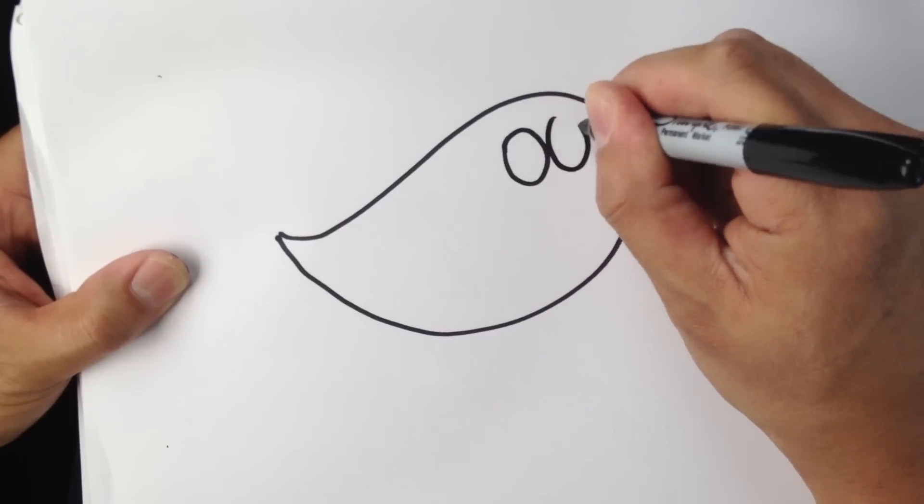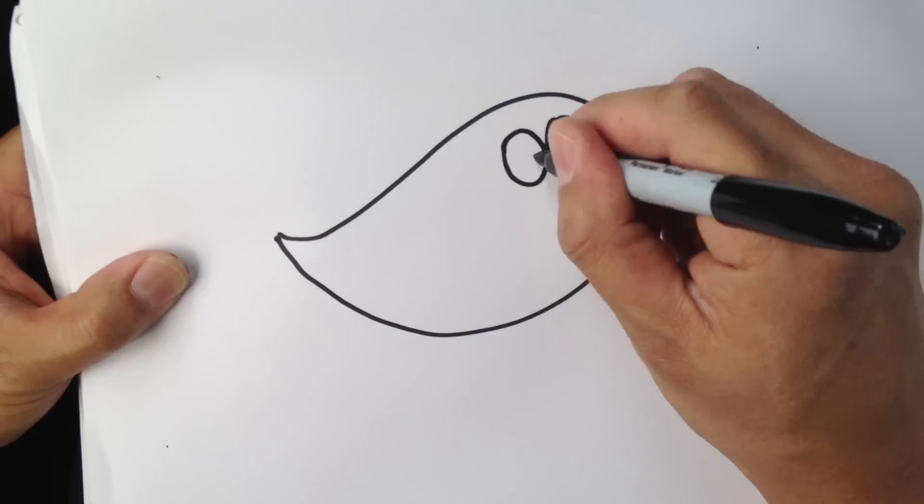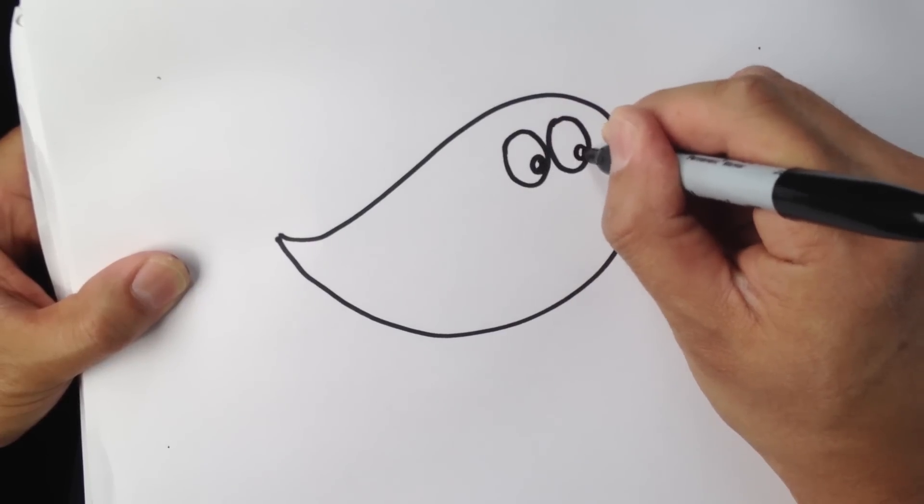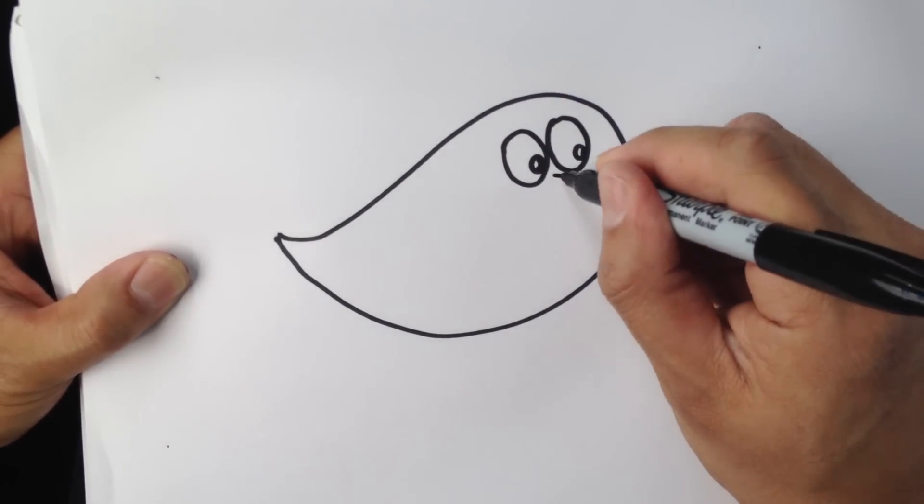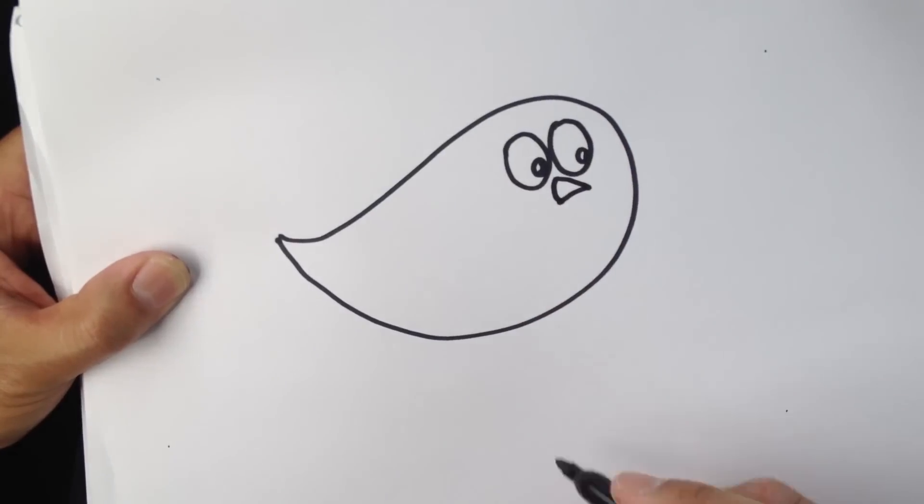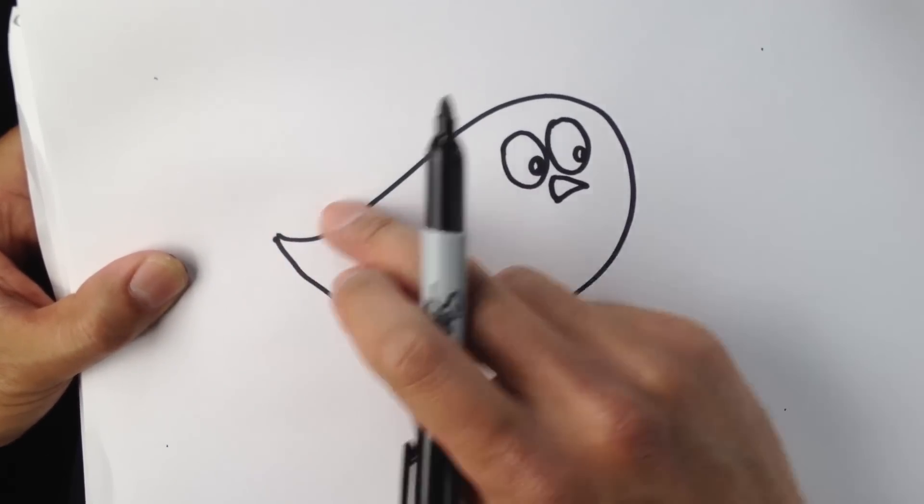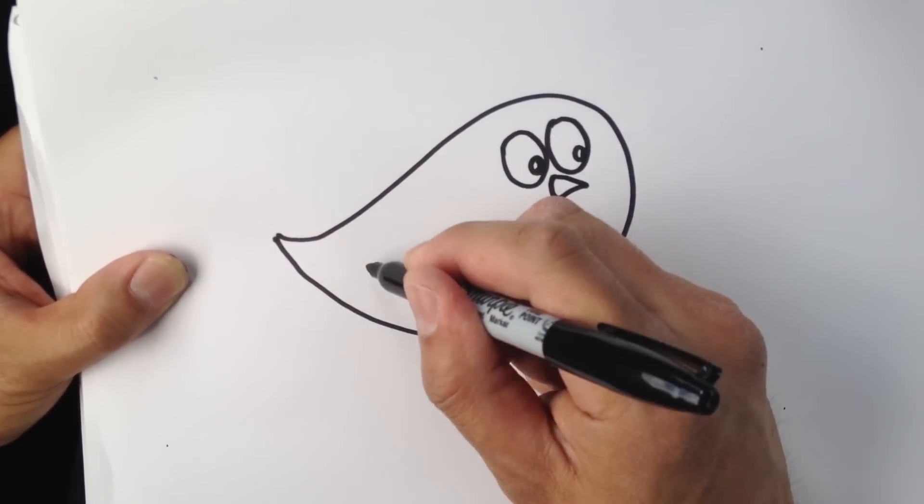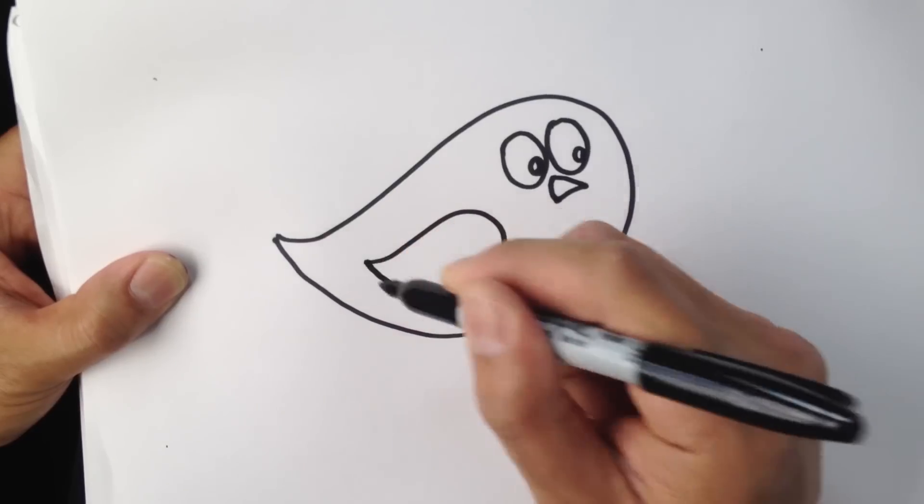Two eyes right beside each other, put in the pupils just like so, a little beak, and then we'll do a smaller shape of this for the wing. Just like so.